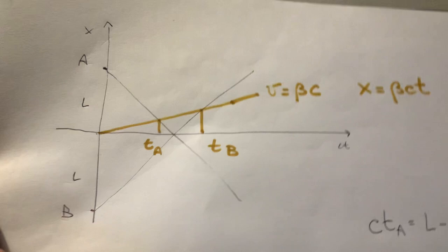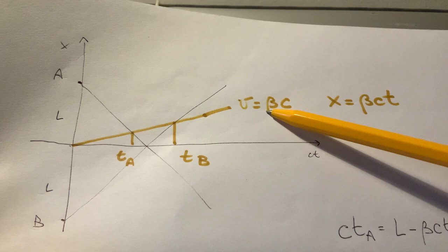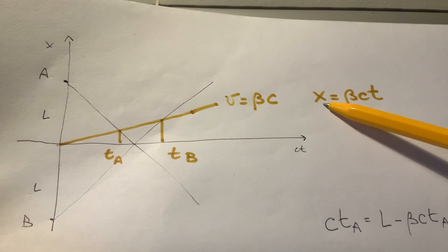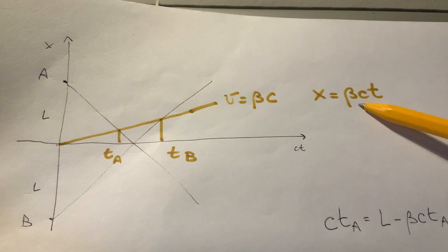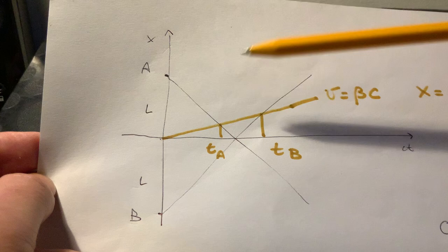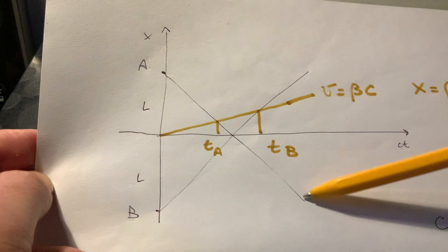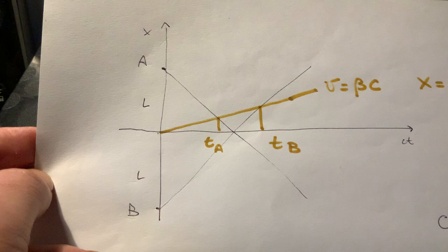If the observer then moves in this frame with a velocity or speed, which is a fraction beta of the speed of light c, then the trajectory or the x as a function of t of the observer would be x equal beta c t. And this is this brown line here. The trajectory of the pulse from beacon A, from light source A, is this straight line with a slope of minus 45 degrees, because it's coming towards the observer.